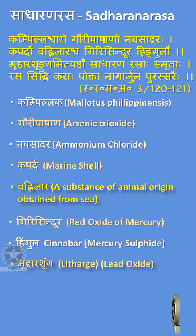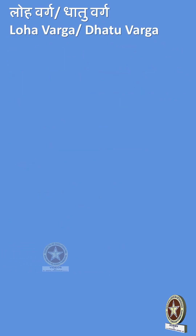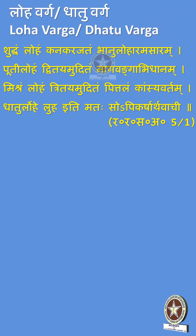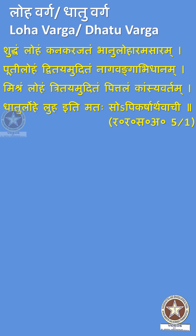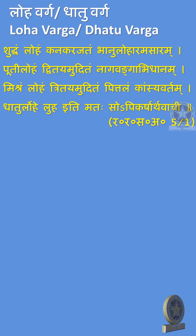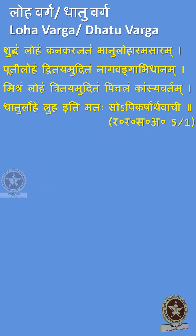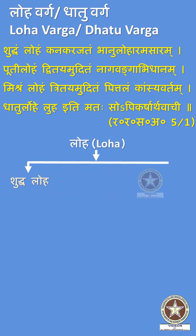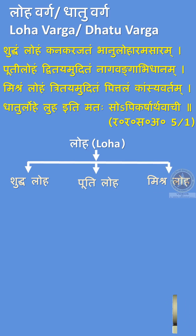The next category is Loha or Dhatu Varga. Reference: Rasaratna Samuchaya Chapter 5 Shloka 1. The shloka reads: Shuddham Loham Kanakarajatam, Banu Lohashmasaram, Puthi Loham Dvitayamuditam, Nagavangavidhanam, Mishram Loham Tritayamuditam, Pittalam Kansyavartam. The Acharya classified Loha into three basic categories: Shuddha Loha, Puthi Loha, and Mishra Loha.